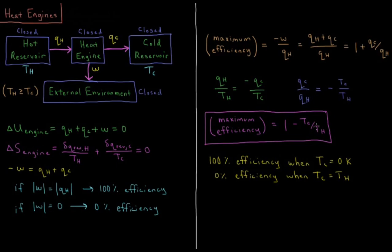When does our engine get 100% efficiency? We can only get 100% efficiency when the temperature of the cold reservoir equals zero. When TC equals zero, any tiny amount of heat pumped into the cold reservoir is sufficient to satisfy the second law. Our engine has 0% efficiency when the cold reservoir equals the temperature of the hot reservoir — if there's no temperature difference, all heat pumped out of the hot reservoir must be matched by heat pumped into the cold reservoir to keep entropy change positive.